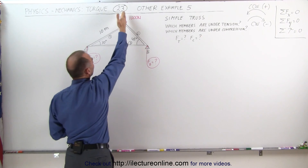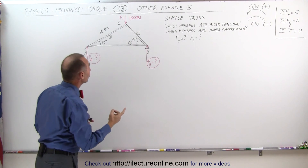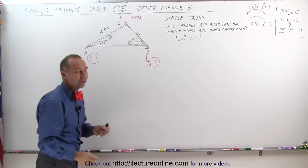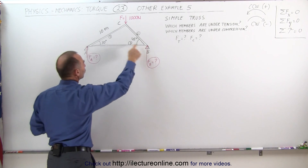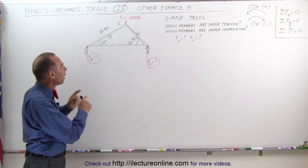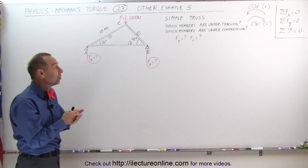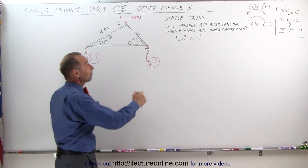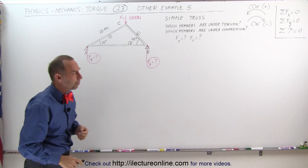We have a force of a thousand newtons pushing down at the top, and what we want to do is determine what the force is at A and what the force is at B. This is the reactionary force from the ground back up — from the two supports or the two pillars. We also want to know which of the three members are under tension and which are under compression, and then find the force of tension and compression on those members.